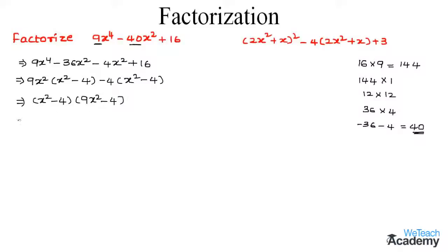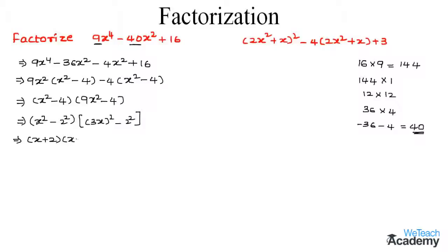We can write x square minus 4 as x square minus 2 square. And 9x square minus 4 can be written as 3x whole square minus 2 square. These terms are in the form of the formula a square minus b square. Applying this formula we get x plus 2 into x minus 2 into 3x plus 2 into 3x minus 2. These are the four factors of our expression 9x power 4 minus 40x square plus 16.